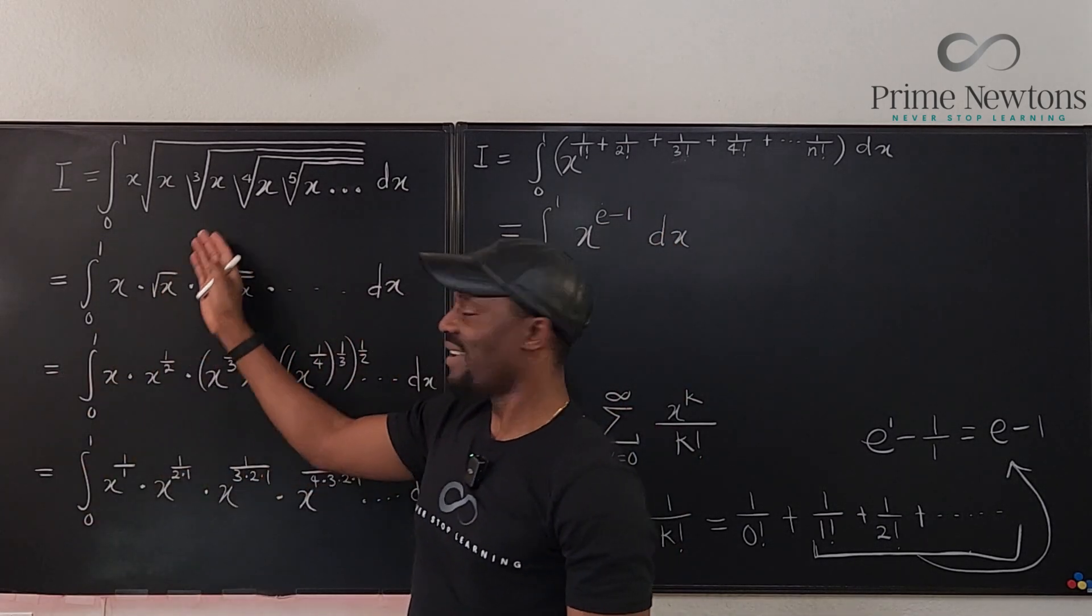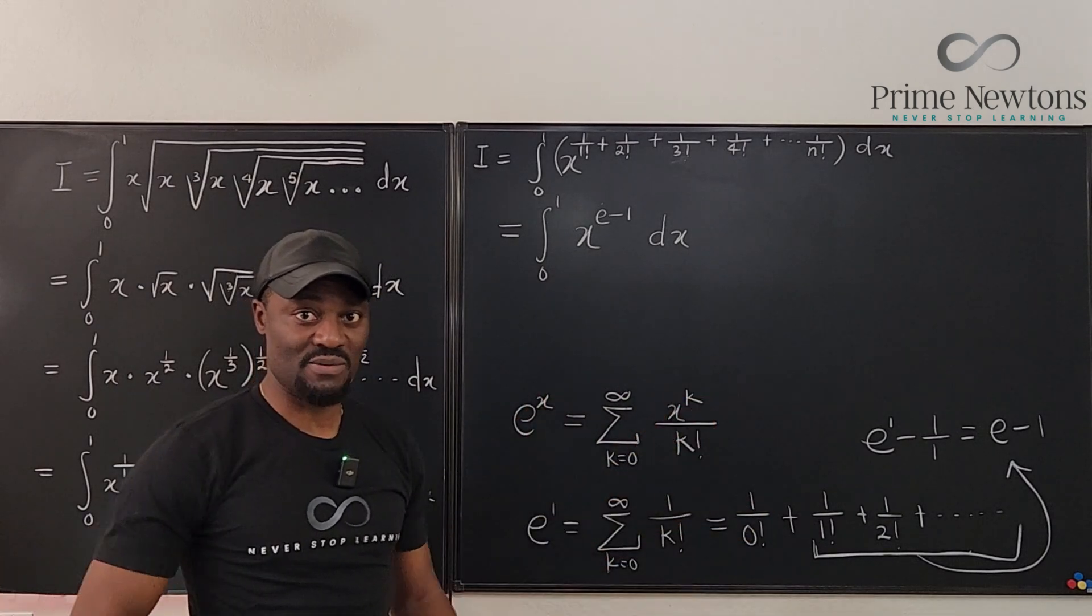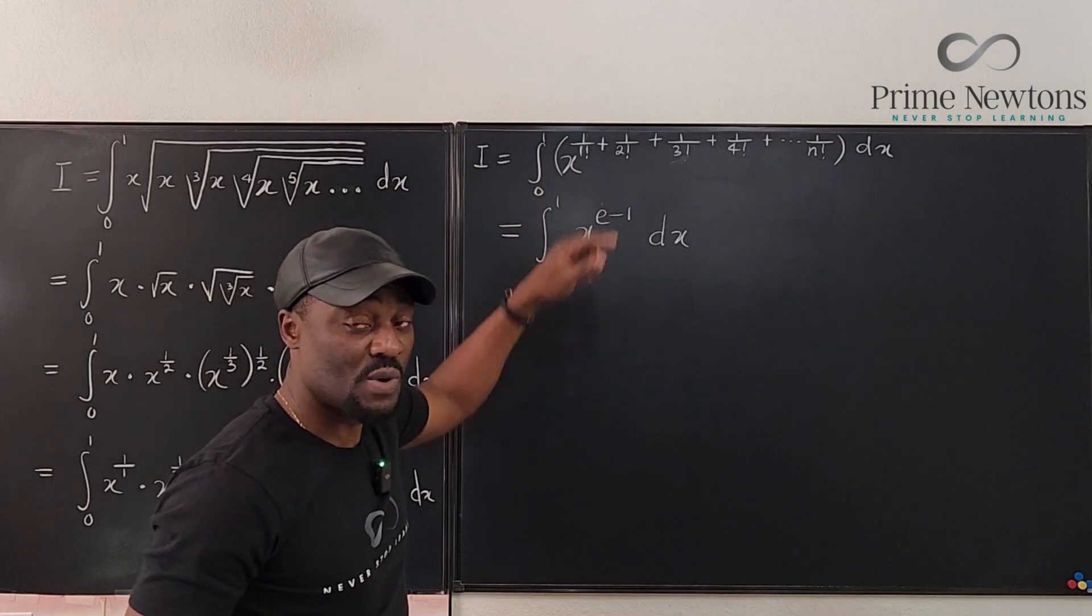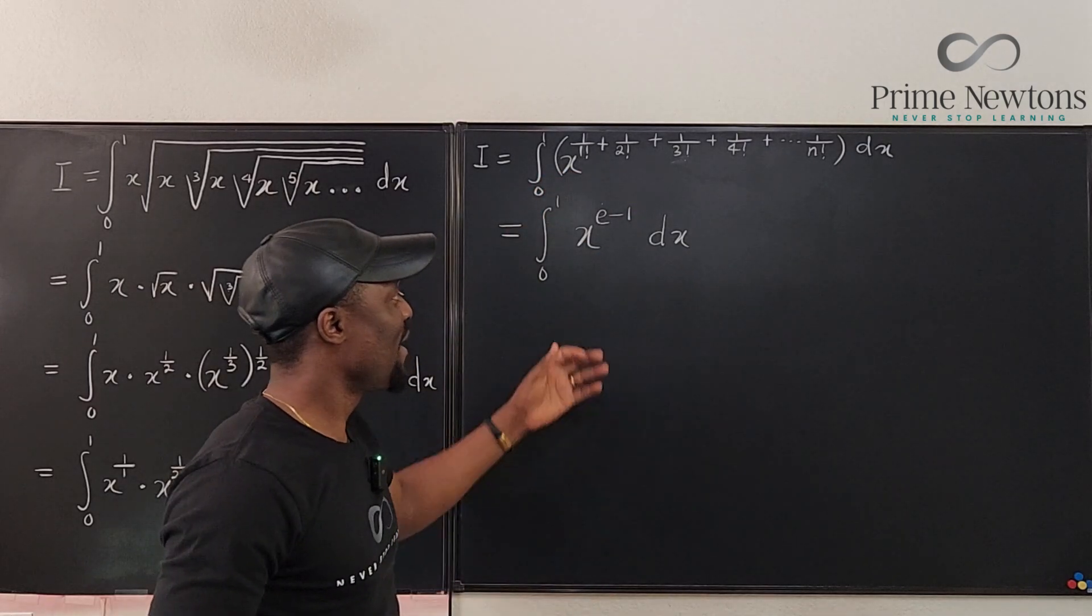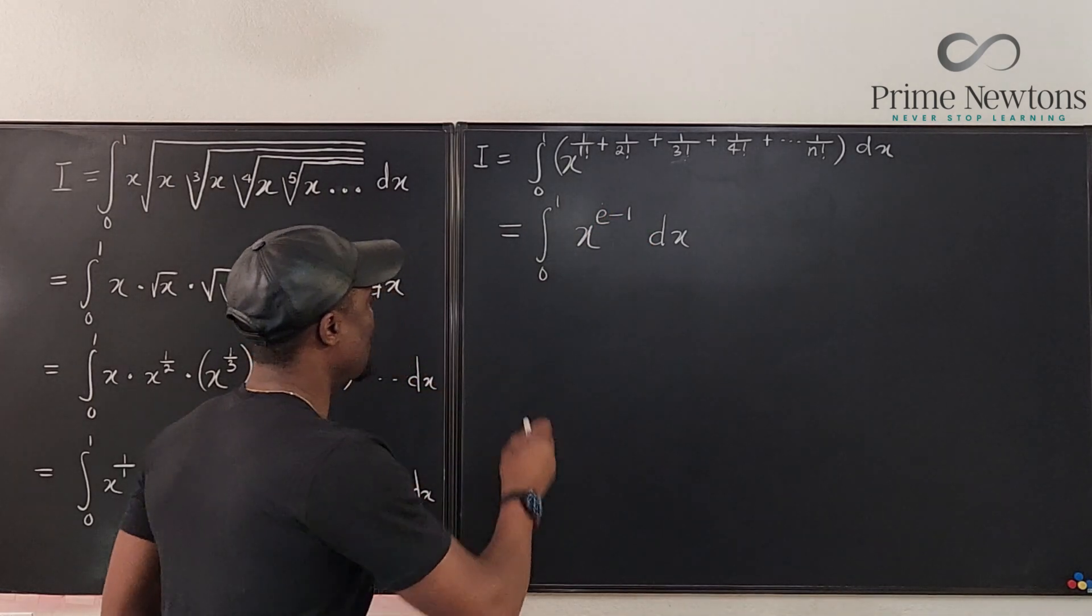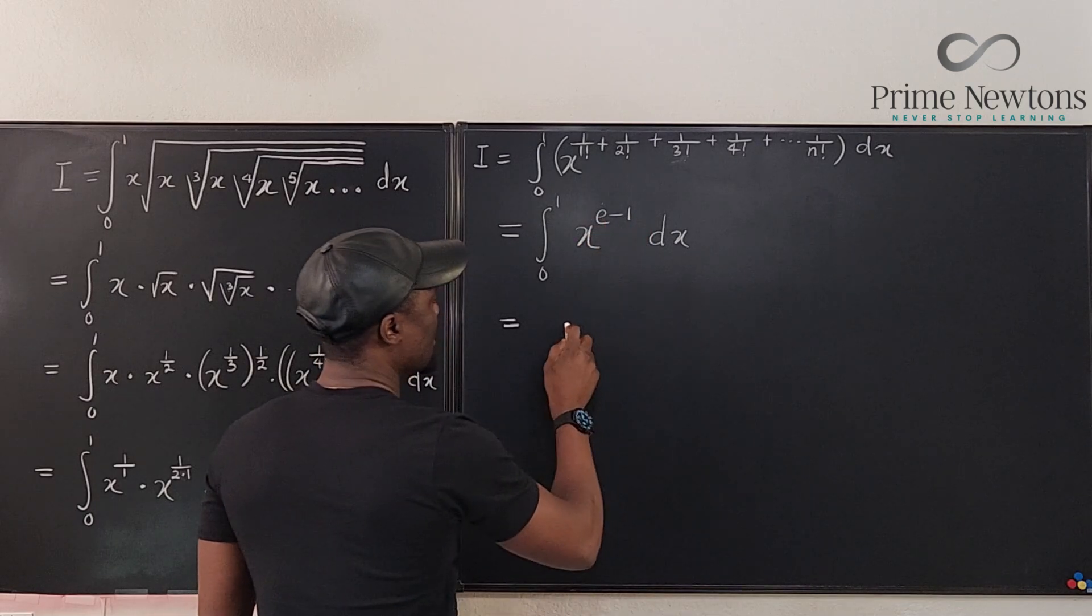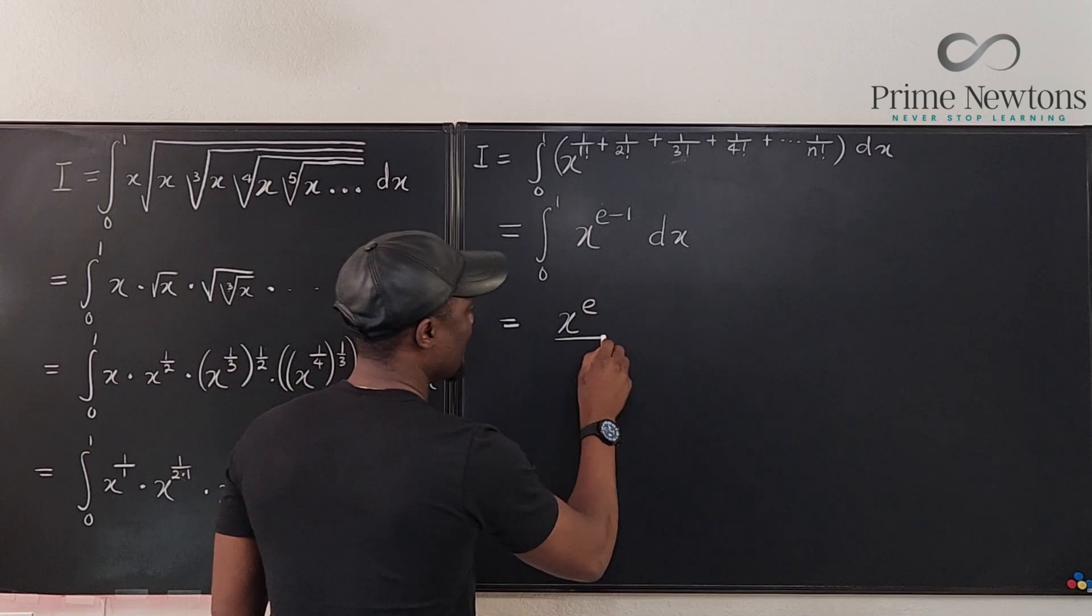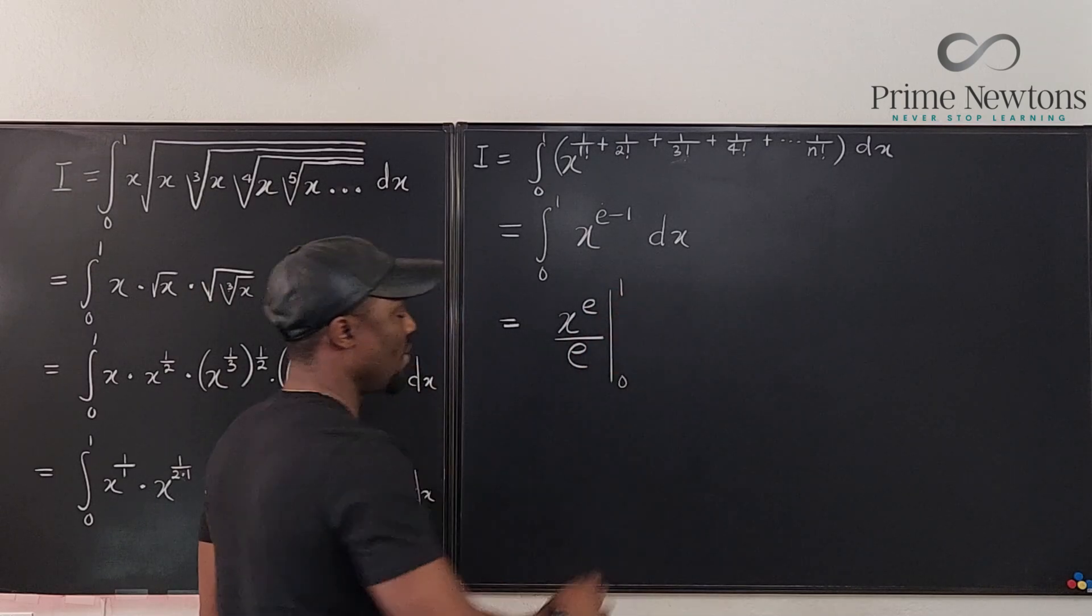So this could have been written like this, and then everybody would be able to integrate this. So applying the laws of, remember that this is a constant, e minus one is a constant, so we just apply the typical laws of integration, the power rule. Here we're going to have, you add one, and you divide by your answer. So if we integrate this, we're going to add one to this, which gives us x to the e, so we have x to the e divided by this same e, and then we're going to evaluate from zero to one.